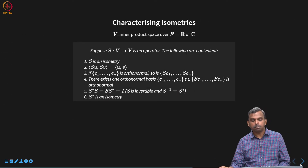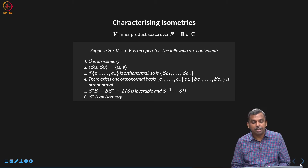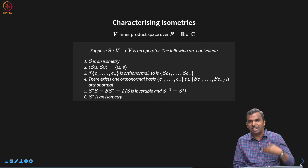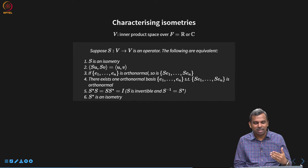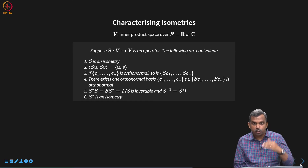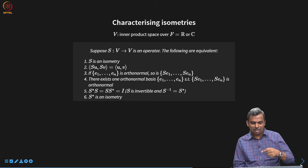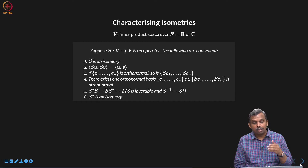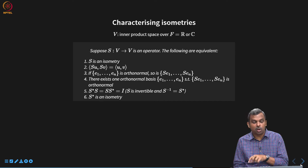The next slide gives the complete characterization for an isometry. Starting with an inner product space over ℝ or ℂ and an operator S from V to V, all of the following are equivalent — we prove them cyclically: 1 implies 2 implies 3 implies 4 implies 5 implies 6 implies 1. The first condition is that S is an isometry: ‖Su‖ = ‖u‖ and ‖Sv‖ = ‖v‖. The second, stronger result is that isometries preserve inner products: ⟨Su, Sv⟩ = ⟨u, v⟩ for all u, v.